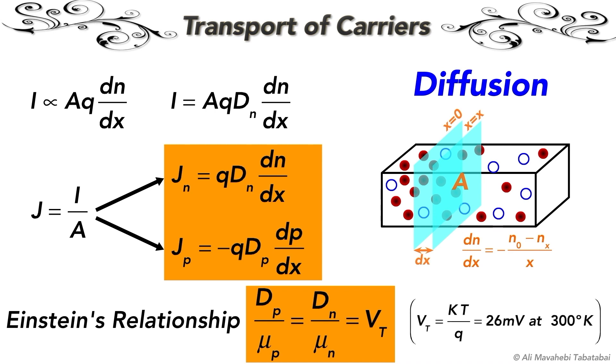Where K is the Boltzmann constant, T is the temperature, and Q is the charge. The value of VT is approximately 26 millivolts at 300 degrees Kelvin or room temperature.